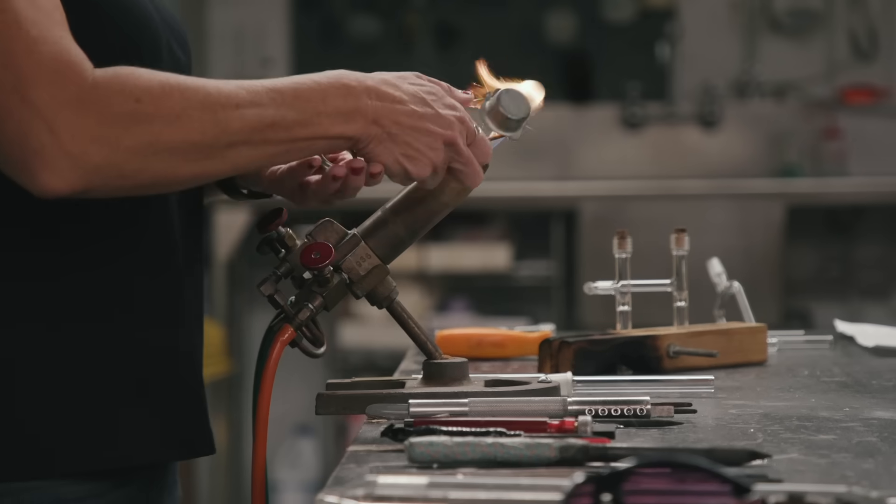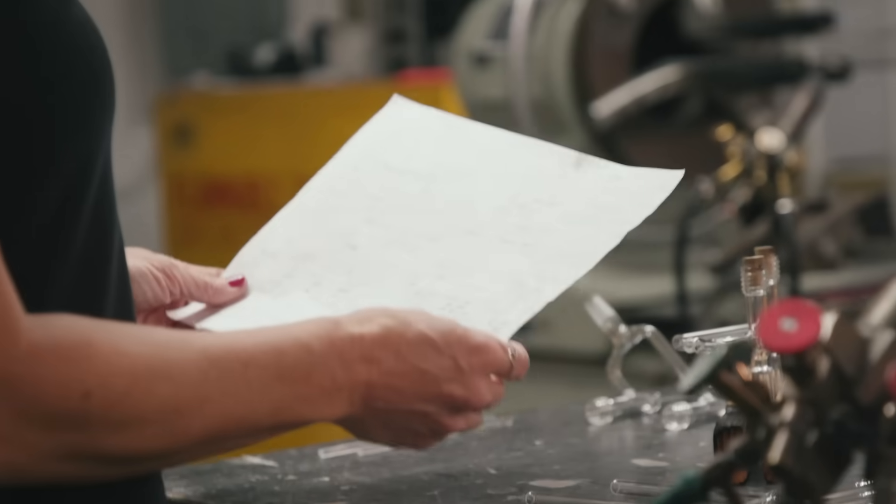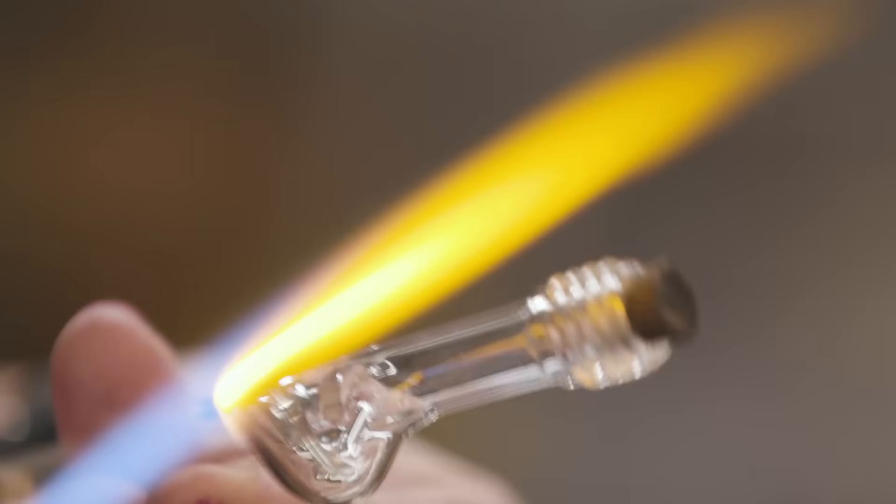I work with borosilicate glass and quartz glass to fabricate different pieces for different kinds of research. I work with that glass with my hands in a flame, and the flame produces a temperature of about 3,000 degrees. That gets the glass hot enough to fabricate it into what it needs to be.